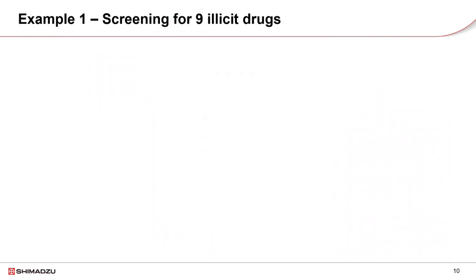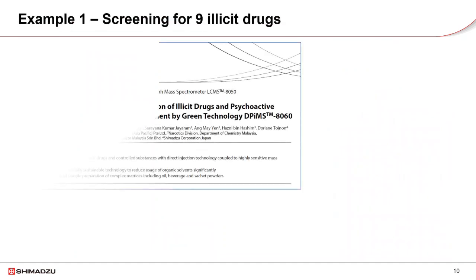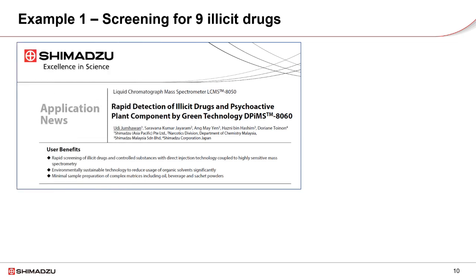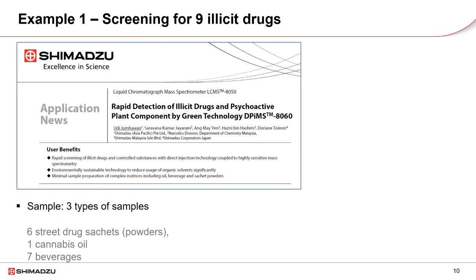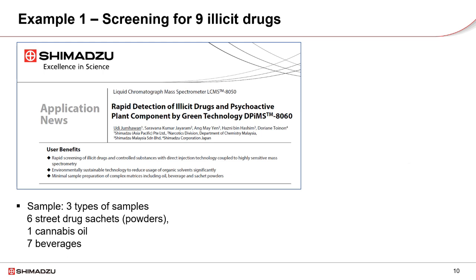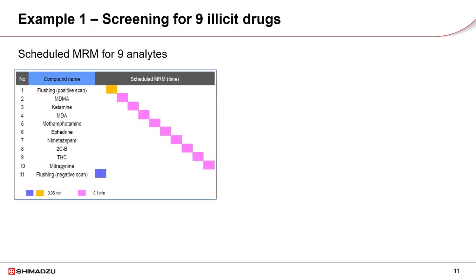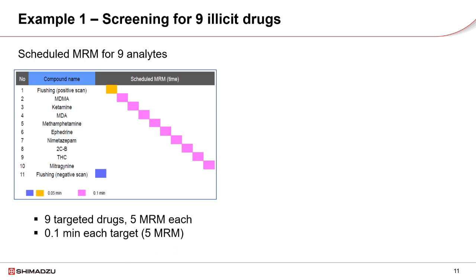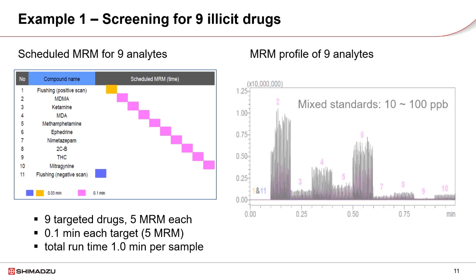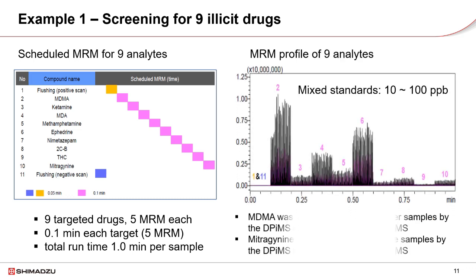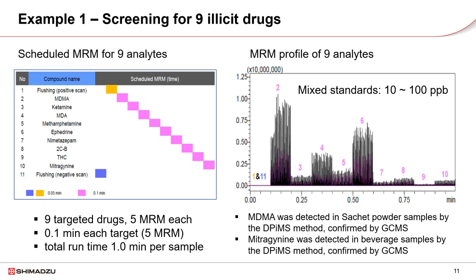The first example uses DPI-MS for screening nine illicit drugs in different sample types. Sample pre-treatment is extremely simple: dissolve the sample in a water and isopropyl alcohol mixed solvent, then load 10 microliters onto the sample plate. MRM parameters are established first, and a scheduled MRM method is set up. Detection of every compound requires only 0.1 minutes, and the total analysis time for nine compounds is only 0.9 minutes.